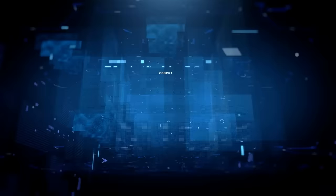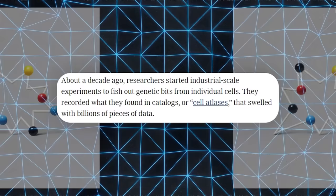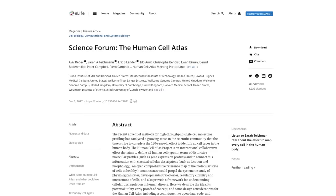For years, biologists have been intrigued by how our body's different cells utilize genes to perform the myriad tasks necessary for survival. Roughly 10 years ago, large-scale experiments began aimed at identifying genetic information from individual cells. The findings were cataloged in extensive databases, or cell atlases, that grew to contain billions of data points.